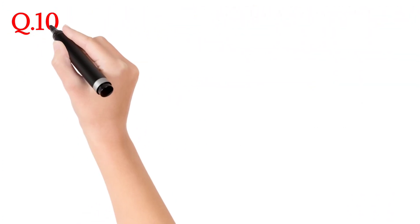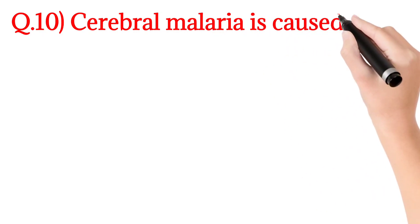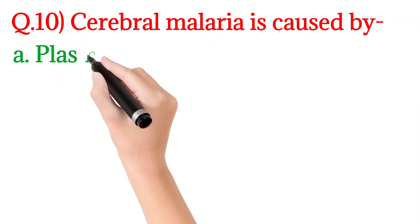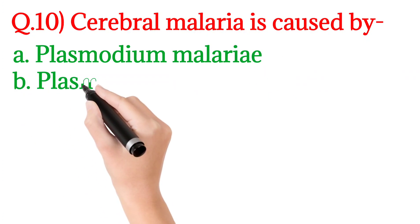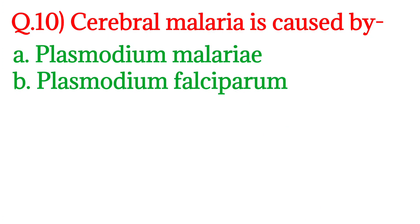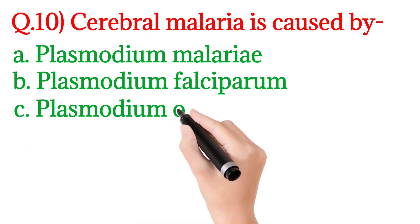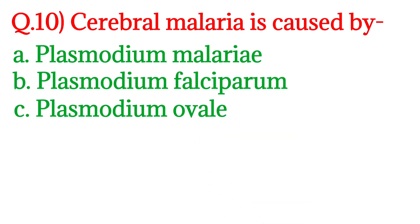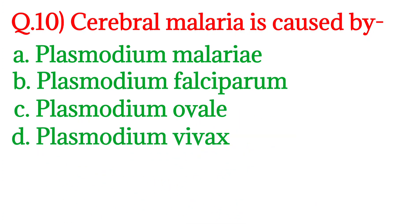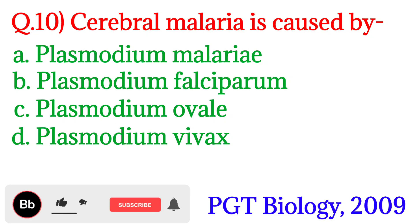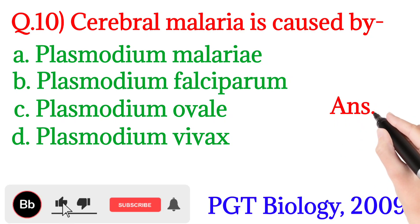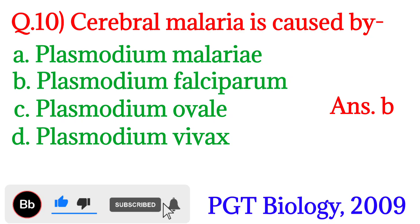Question 10: Cerebral malaria is caused by? Option A: Plasmodium malariae, Option B: Plasmodium falciparum, Option C: Plasmodium ovale, Option D: Plasmodium vivax. This question was asked in PGT Biology 2009. The answer is Option B: Plasmodium falciparum.